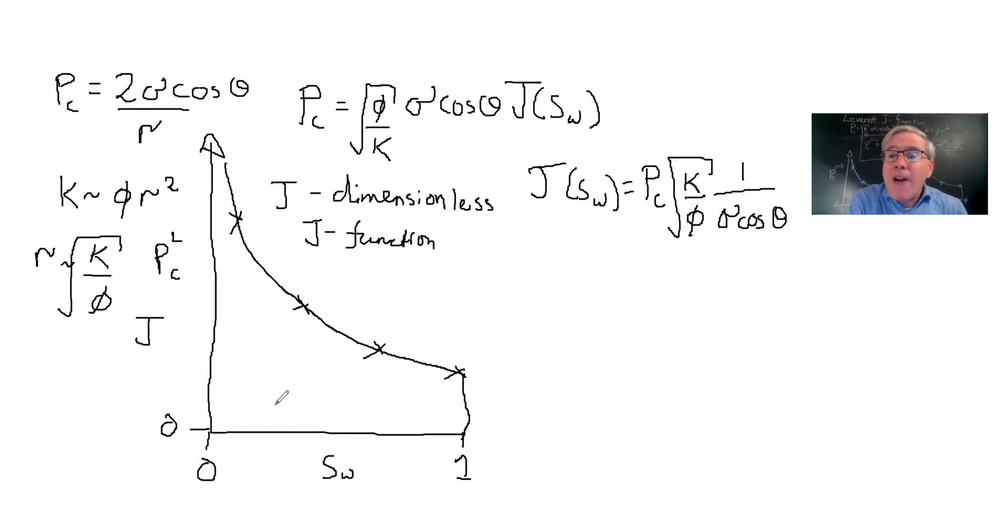So instead of PC, this doesn't have any units, I could instead write J. It would have the same shape, but it would be a dimensionless function. Now, what values would you expect? This J empirically typically has values between 0 and 1 for most of the displacement. A typical entry pressure here normally is J in the range of about 0.2 to 0.3.